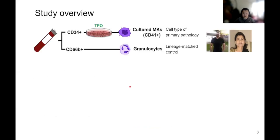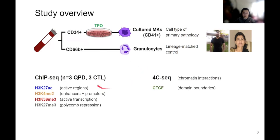To study this mechanism, we needed a system to study PLAU regulation in the context of the QPD mutation in a disease-relevant cell type. Kathy's lab worked up a system using primary blood samples from QPD and unaffected individuals, isolating CD34-positive progenitors and differentiating them in vitro to obtain cultured megakaryocytes as the cell type of primary pathology. They also isolated peripheral granulocytes as a lineage-matched control. Within these cells, we performed epigenetic-based assays: ChIP-seq looking at active enhancers and repressed regions, as well as assays for 3D chromatin conformation at the locus.